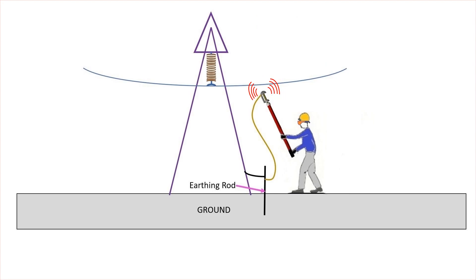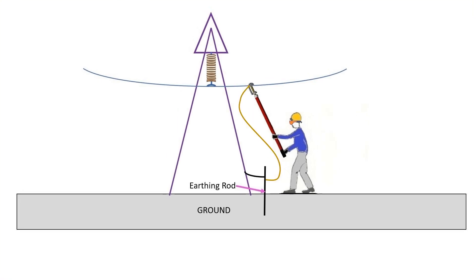In case the line is found to be energized during line teasing, then the ground stick must be connected to the line immediately. After doing so, the earth fault relay will automatically trip the circuit after sensing the earth fault.